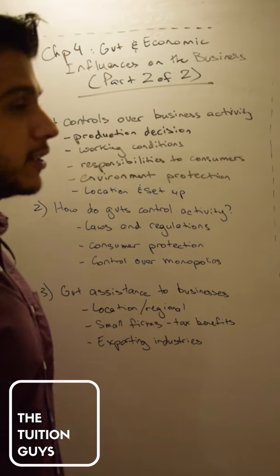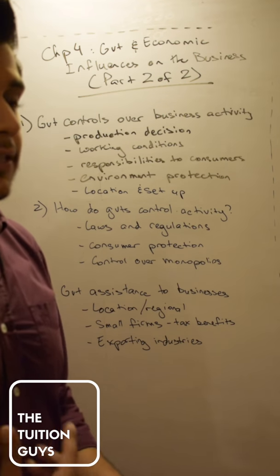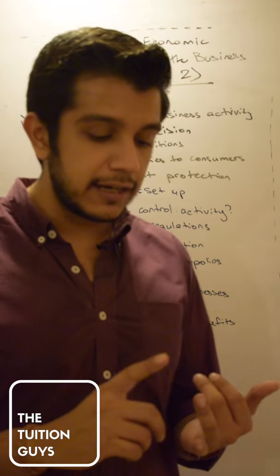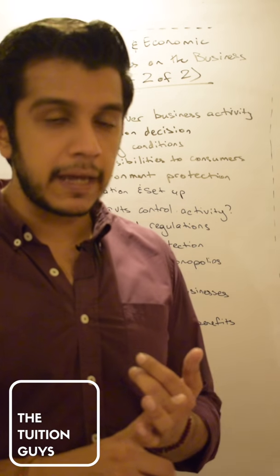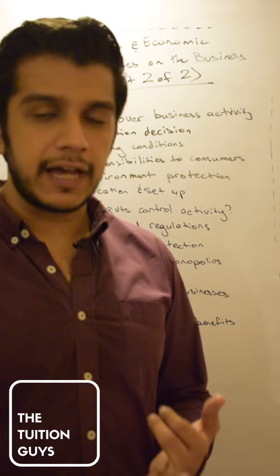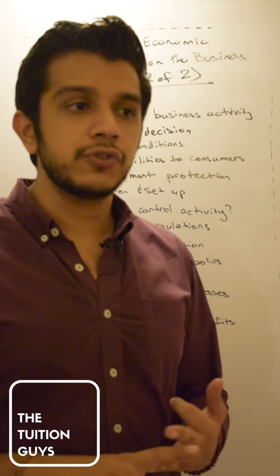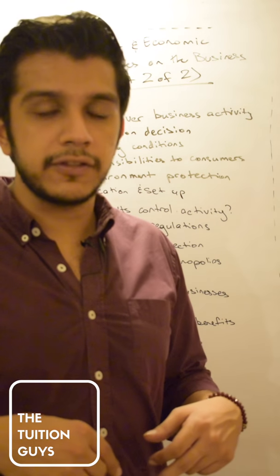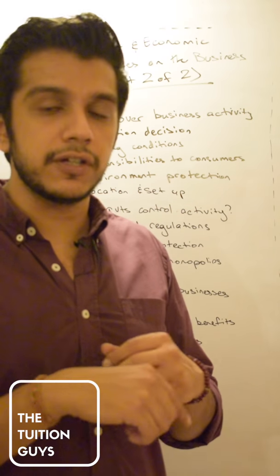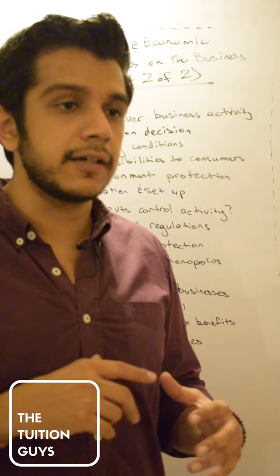Secondly, the government might try to influence working conditions and that's based on making sure that the employees are safe, that all regulations are met, basically in terms of fire hazards and so on. And then also that those around the business or the factory or the shop are not affected.